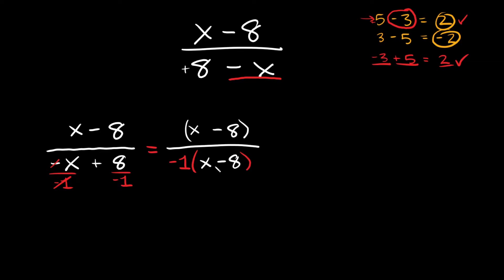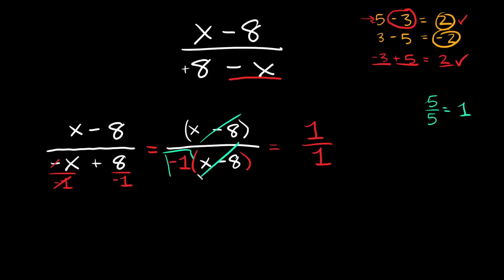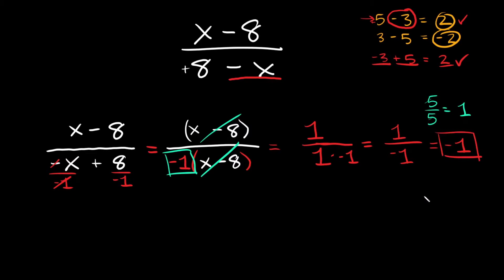Now we have the same thing on the top as in the bottom — x minus 8 and x minus 8 — so we can cancel those out. Whenever something cancels on the top and bottom, it reduces to 1, just like 5 divided by 5 is 1. So x minus 8 over x minus 8 reduces to 1. We're left with 1 over negative 1, which equals negative 1. So that's your final answer.